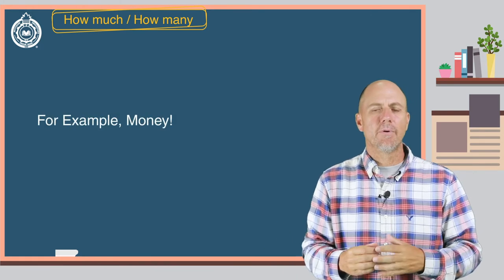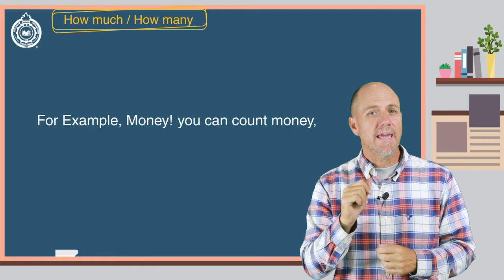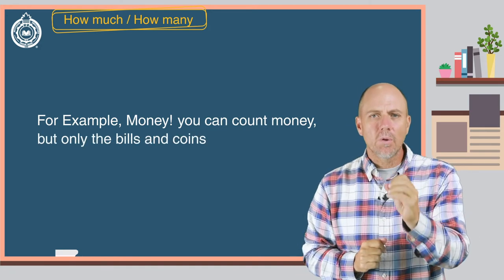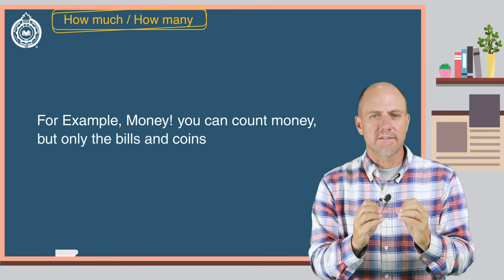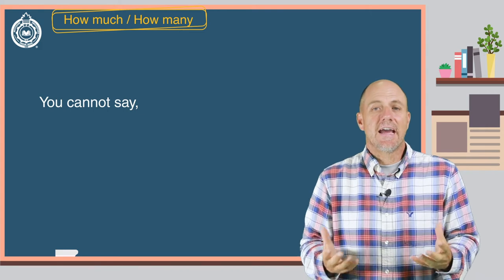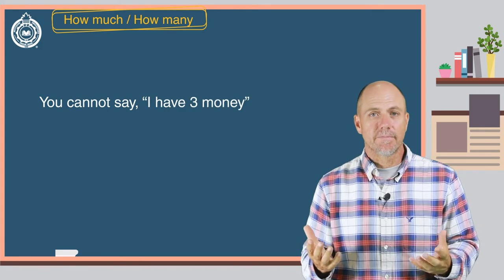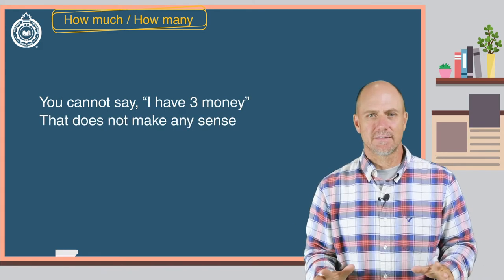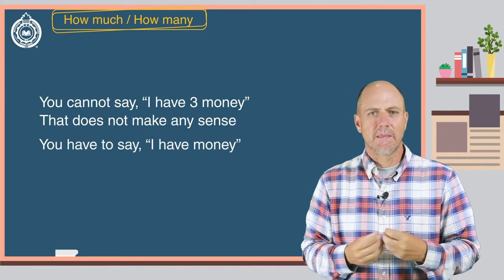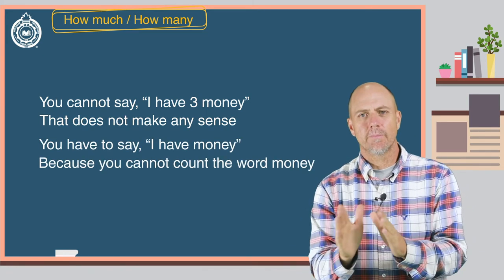For example, money. Yes, you can count money, but only the bills and coins. You cannot say, I have three money. That does not make any sense. You have to say, I have money, because you cannot count the word money.